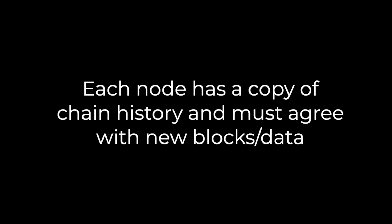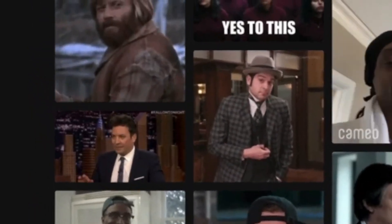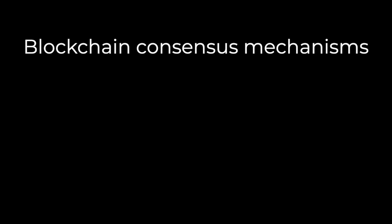The distributed ledger model that blockchain makes possible is powerful because each node agrees about what has taken place. This process of agreement is called consensus. In order to produce a block — think of it as welding shut the next link in the chain — these nodes must validate that block and agree on the data associated with the state of the chain at that point in time. Different chains achieve consensus differently based on their programming.